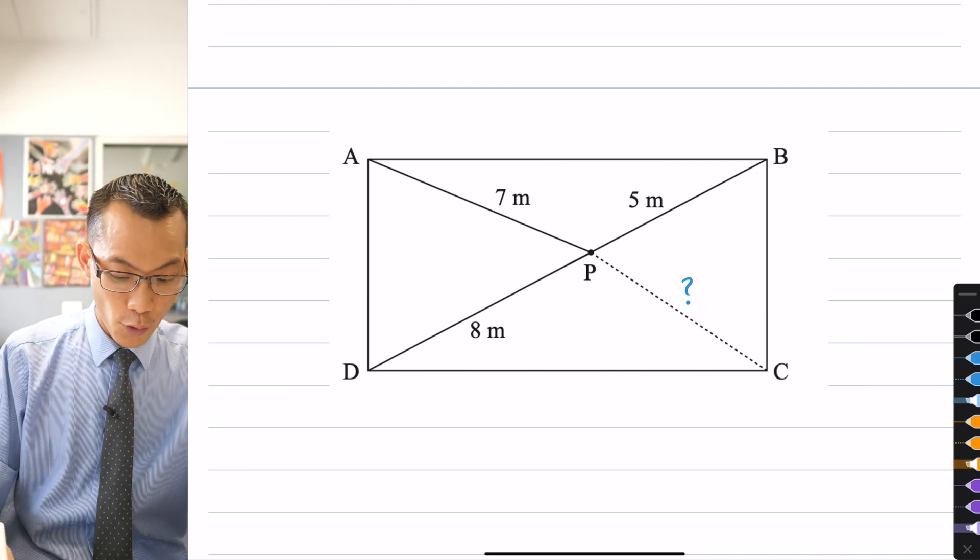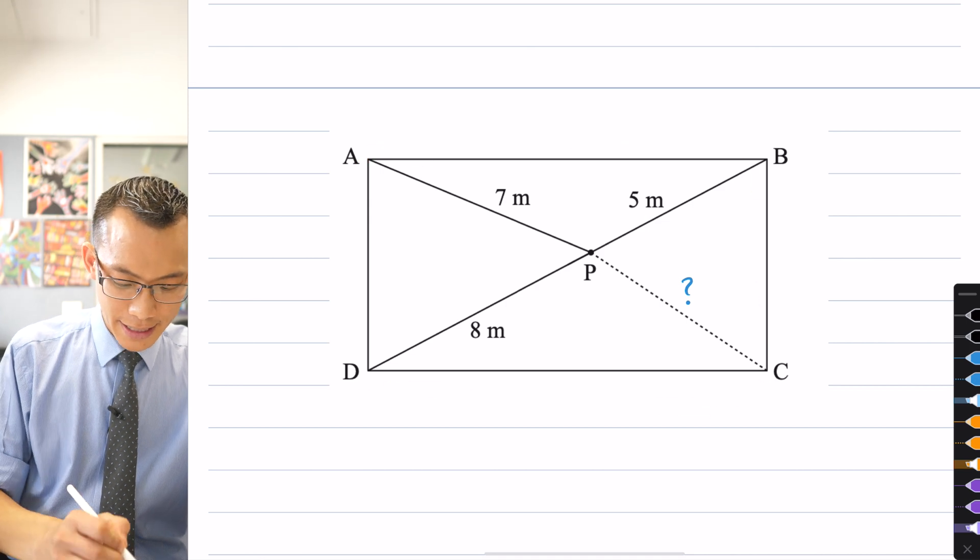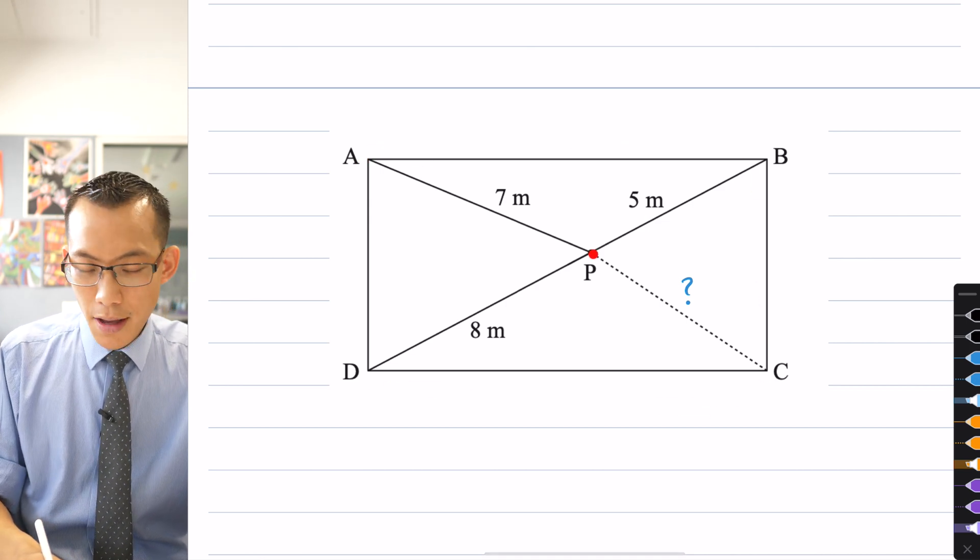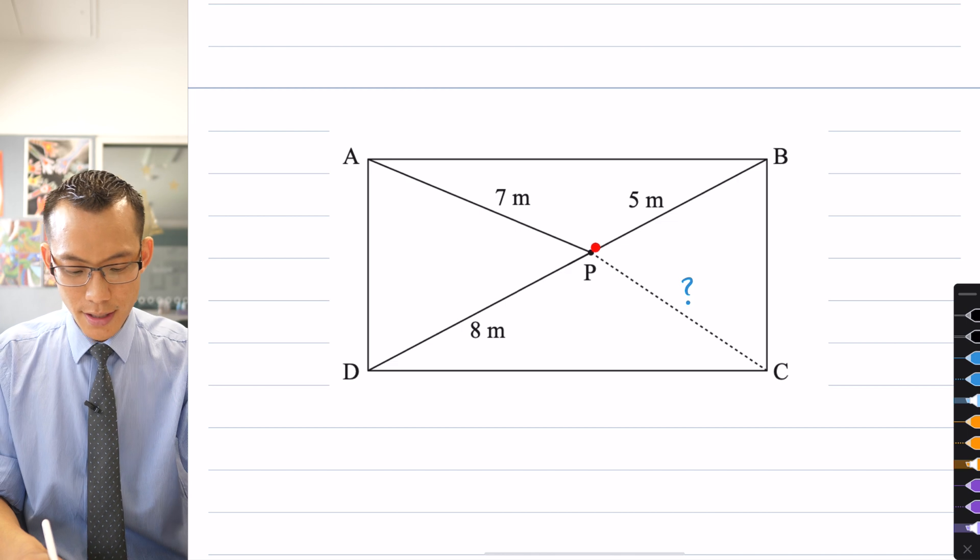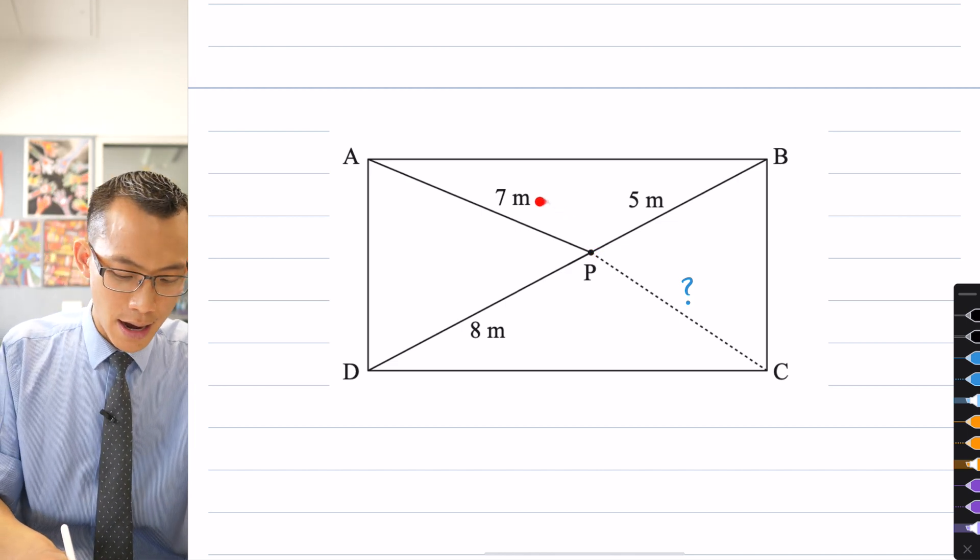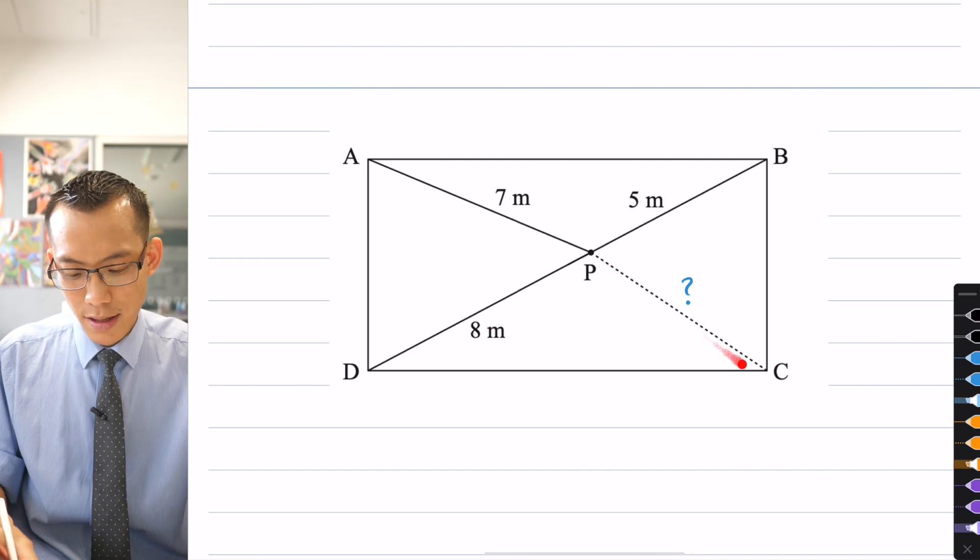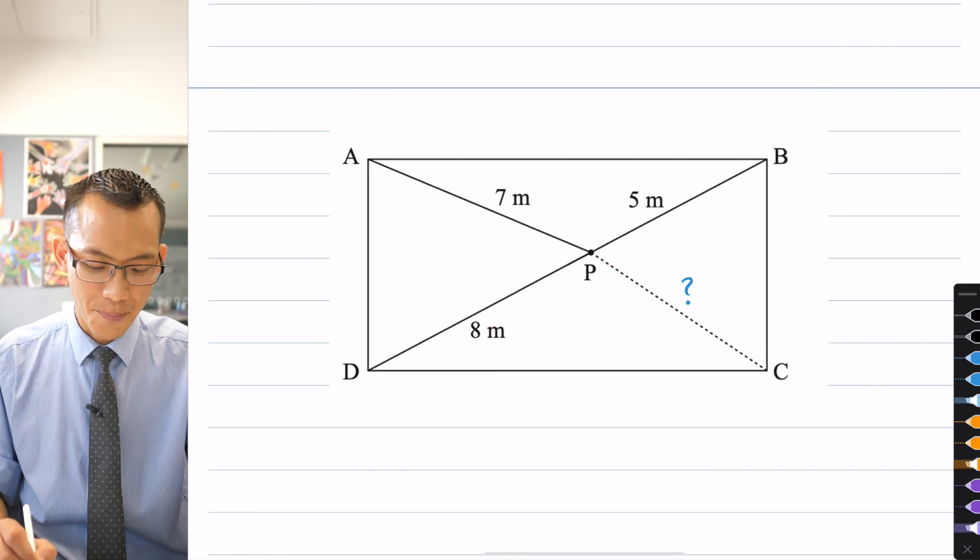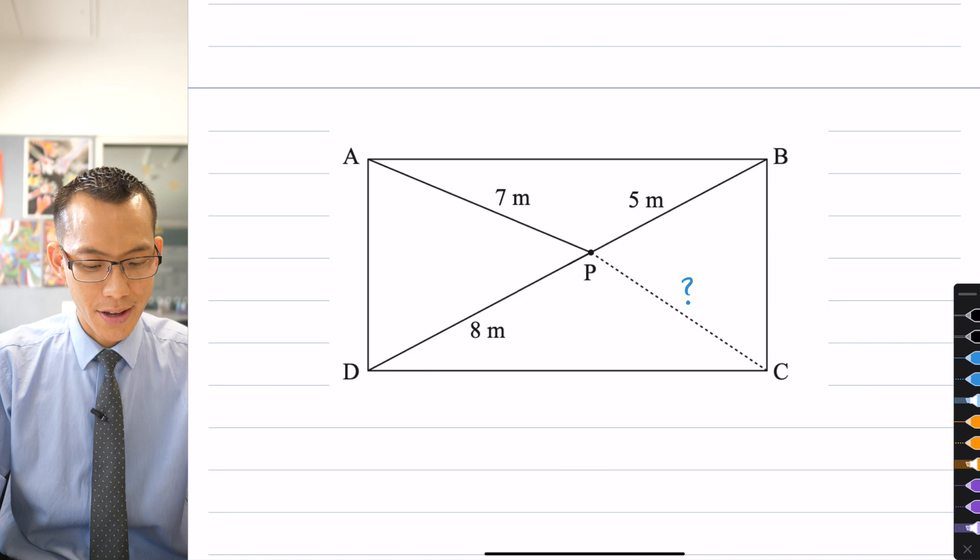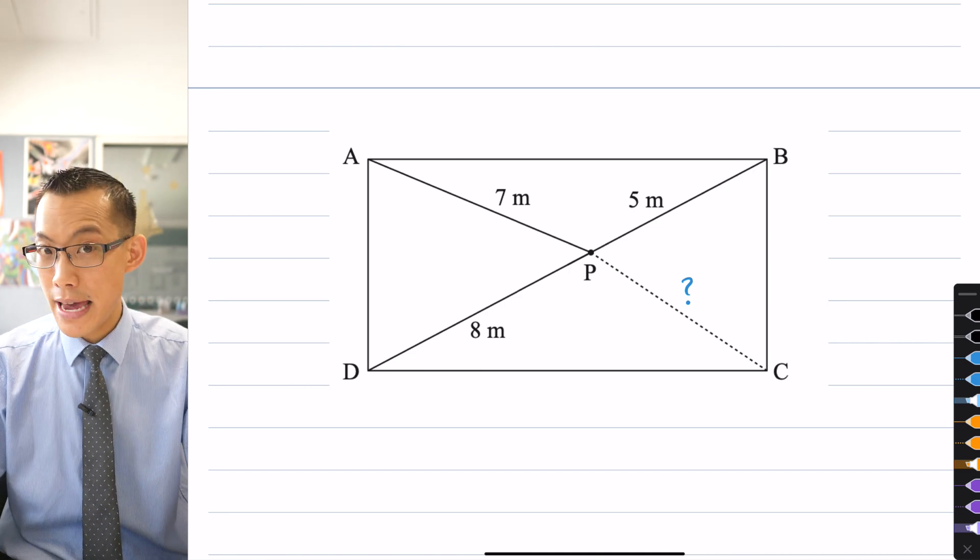If you know that you've got a rectangle here, A, B, C, D, and you've got some point in the middle that has been chosen such that the lengths from the corners are 7, 5, and 8 respectively, what is the length to this final corner here? How can we work out what the value of CP is?